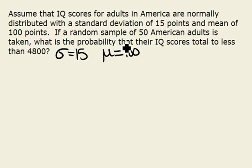We are looking at a sample of 50 American adults and we want to know the probability that their IQ scores total to less than 4800. When we're dealing with 50 adults, our sample size n is equal to 50, and let's let T represent the total.